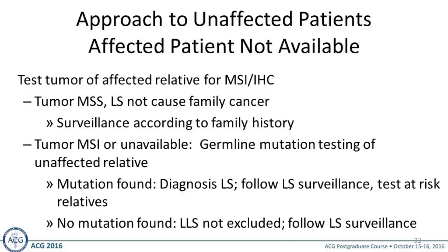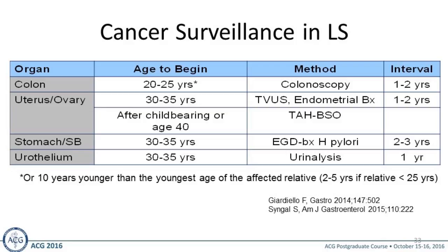Once the diagnosis of Lynch syndrome is made, colonoscopy begins at ages 20 to 25 every 1 to 2 years, or 10 years younger than the youngest affected relative, advancing to every 2 to 5 years. Women need aggressive endometrial and ovarian cancer screening at age 30 to 35 with transvaginal ultrasound and endometrial biopsy every 1 to 2 years, and should consider total abdominal hysterectomy and BSO after childbearing or by age 40. EGD is recommended at baseline age 30 to 35 with H. pylori biopsy, and urothelial cancer screening begins at age 30 to 35 with annual urinalysis, though supporting data is limited.